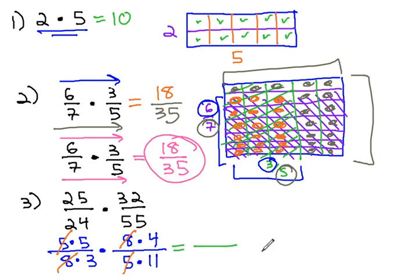In the numerator, 5 times 4 is 20, and in the denominator, 3 times 11 is 33. Our final answer when multiplying 25 over 24 by 32 over 55 is 20 thirty thirds.